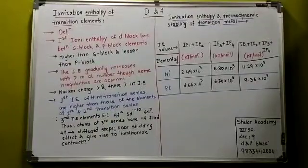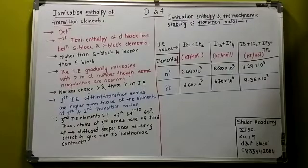Lecture number 9: The ionization enthalpy of the transition elements. If it is a two-mark question expected in your exam, then what all you have to write?